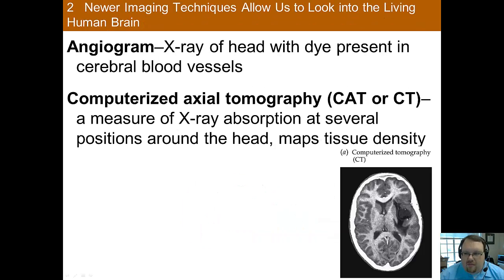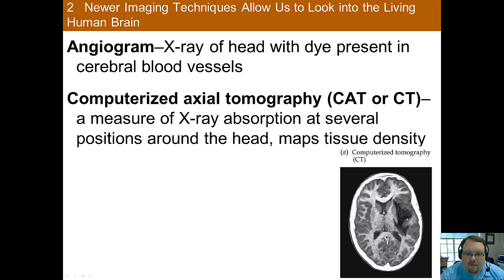Now we're going to move into imaging. We've developed tools to try to see into the brain, to detect abnormalities, and to understand what areas of the brain are active at different times. There are a myriad of technologies that have been used to do this, and this technology has advanced quite a ways — we're able to do things that you couldn't have imagined just years ago.